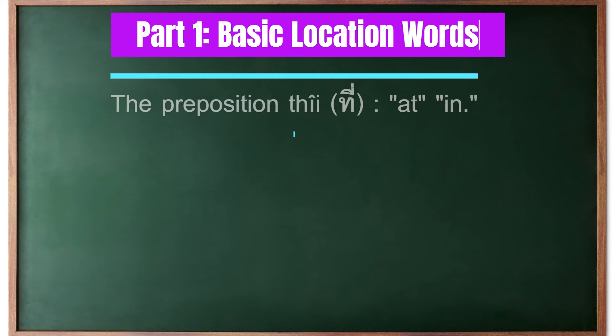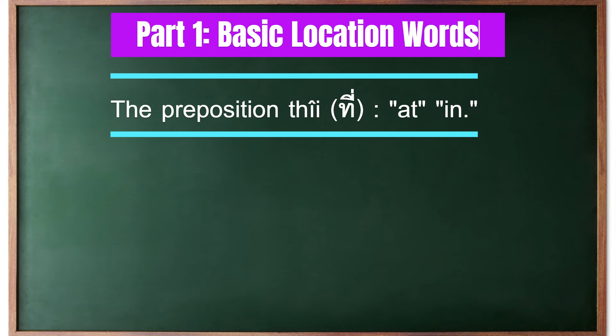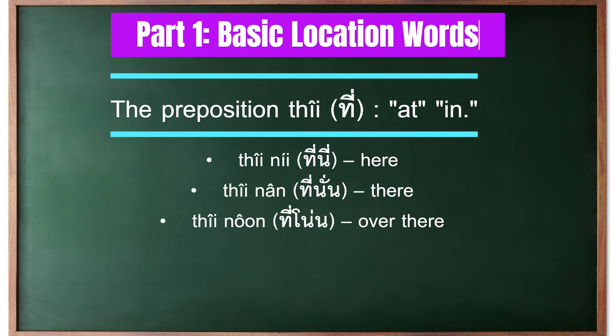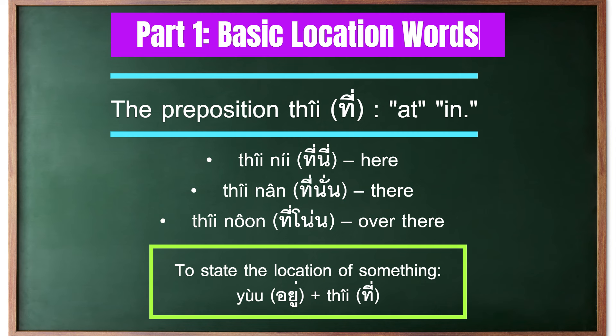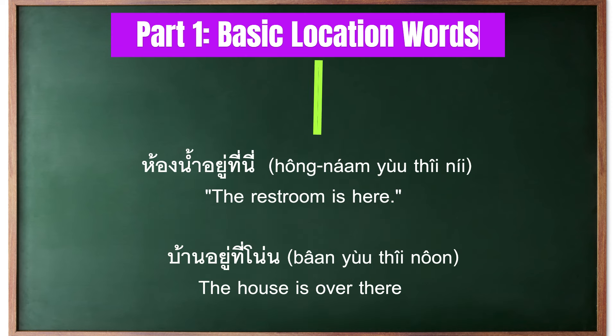In Thai, the most basic location words are formed using the preposition ที่, which means 'at' or 'in'. This preposition is followed by demonstratives to indicate specific locations: ที่นี่ means 'here', ที่นั่น means 'there', and ที่โน่น means 'over there'. To state the location of something, you follow ที่ with the verb อยู่, which means 'to be situated at'.